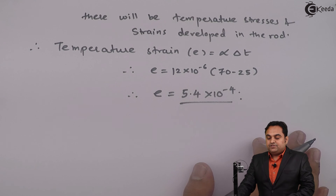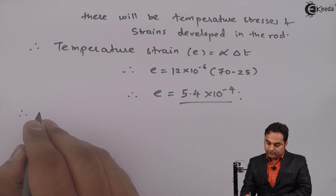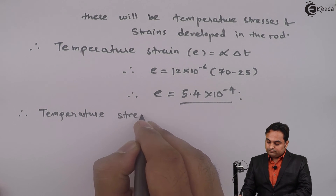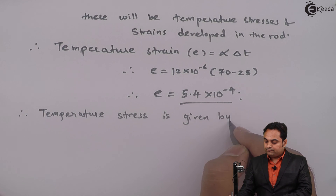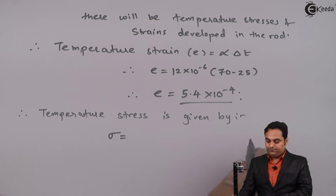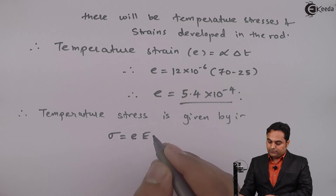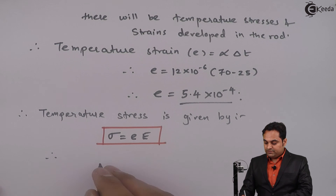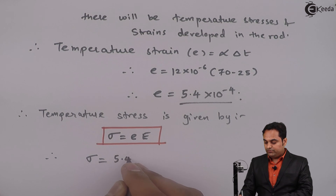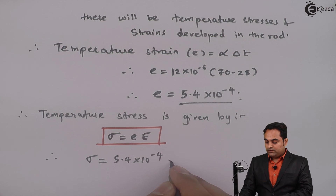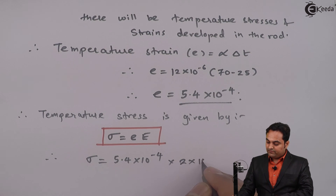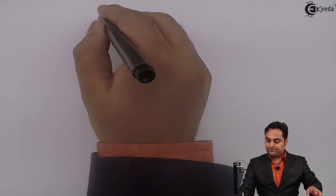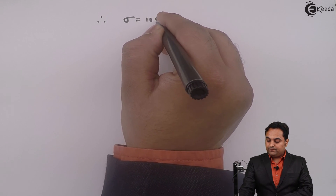After getting the temperature strain, the temperature stress is calculated as sigma = strain × Young's modulus. Therefore, sigma = 5.4 × 10⁻⁴ × 2 × 10⁵, which gives a stress value of 108 N/mm².